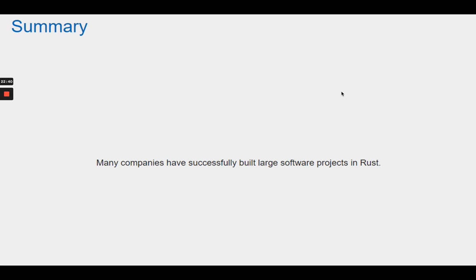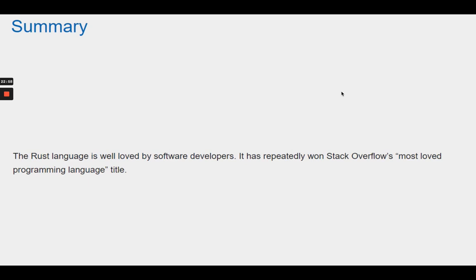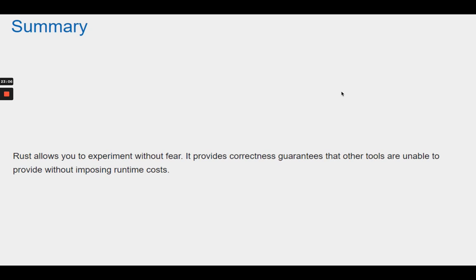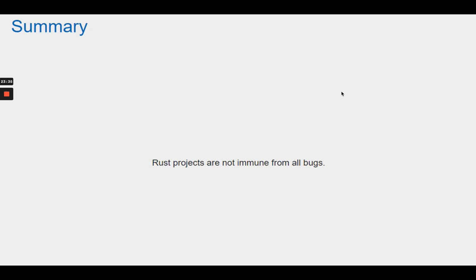Summary. Many companies have successfully built large software projects in Rust. Software written in Rust can be compiled for the PC, the browser, and the server, as well as mobile and IoT devices. The Rust language is well-loved by software developers — it repeatedly wins Stack Overflow's most loved programming language title. Rust allows you to experiment without fear, providing correctness guarantees that other tools are unable to provide without imposing runtime costs. With Rust, there are three main command line tools to learn: Cargo, which manages a whole crate; Rustup, which manages Rust installations; and Rustc, which manages compilation of Rust source code. Rust projects are not immune from all bugs. Rust code is stable, fast, and light on resources.